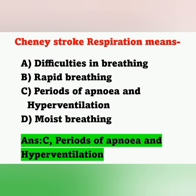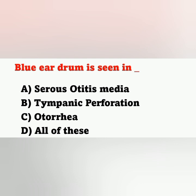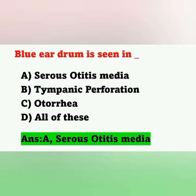The next question: Blue eardrum is seen in — Option A: serous otitis media; Option B: tympanic perforation; Option C: otorrhea; Option D: all of these. In which condition can a blue eardrum be seen? The correct answer is Option A: serous otitis media.